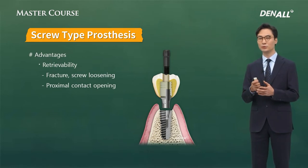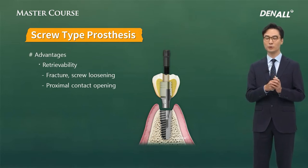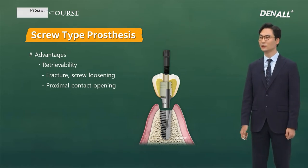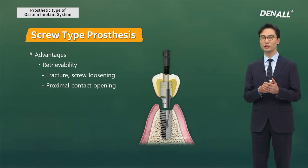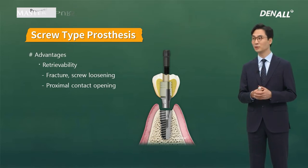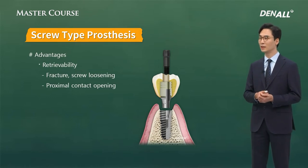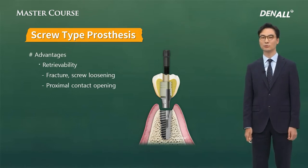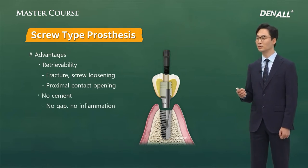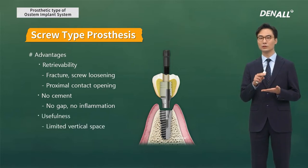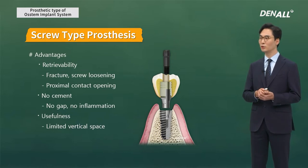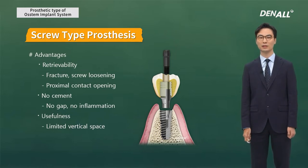Using the screw hole, the delivered prosthesis can be removed by removing the resin, and if necessary, it can be reconnected. This is a major plus in cases of complications such as fracture of prosthesis, screw loosening, or proximal contact loosening due to adjacent tooth mesial shift. It is cement-free, so complications due to cement can be avoided. Among the three prosthesis types, it requires the least amount of space.